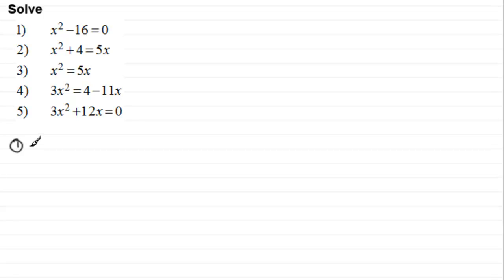So for number one, we've got x squared minus 16 equals naught. To do something like this, there's two ways you can do it, but I'm going to factorise this first of all.